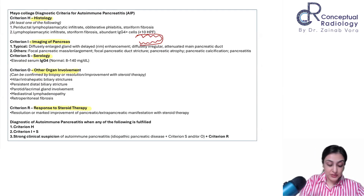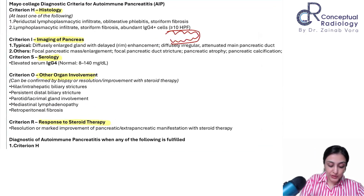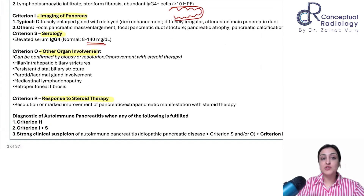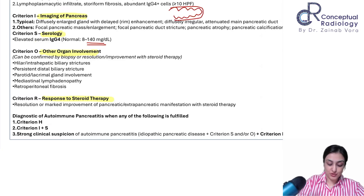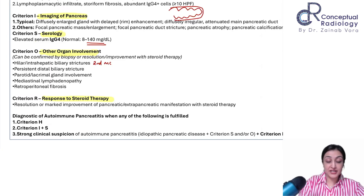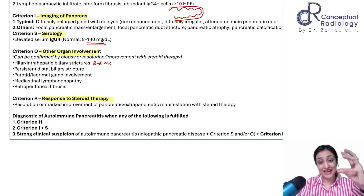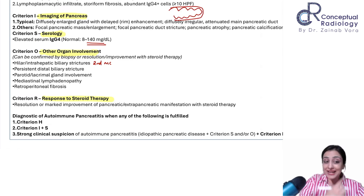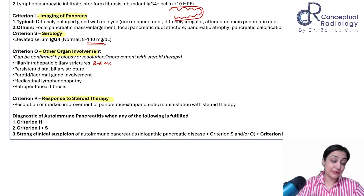IgG4 levels more than 140 mg/dL are raised. For other organ involvement, the second most common are bile ducts with bile strictures — usually hilar but can have distal biliary strictures as well. Other organs include parotid, lacrimal gland, pseudotumors, mediastinal involvement, and retroperitoneal fibrosis.